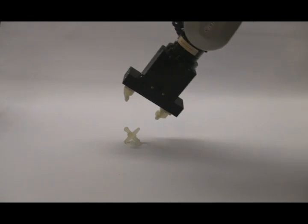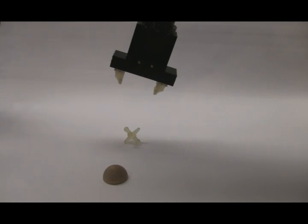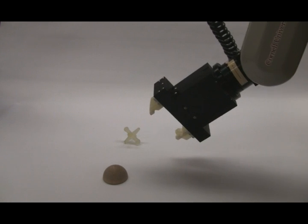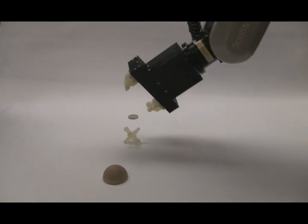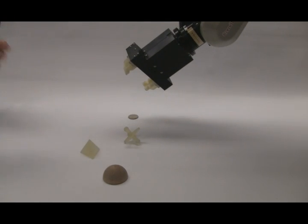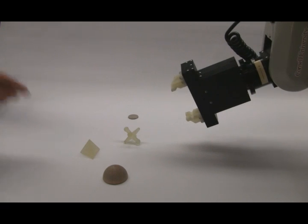For robots, picking up items with different shapes, sizes, or textures can be a hard task. A robot will often find that its gripper is inadequate for handling complex objects or objects it has never encountered before.